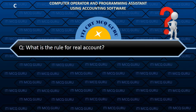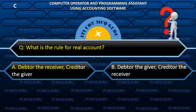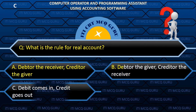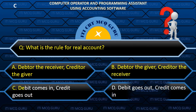What is the rule of real account? C. Debit comes in, credit goes out.